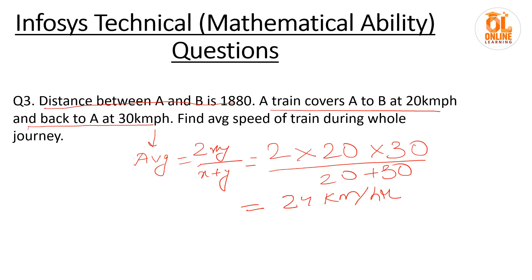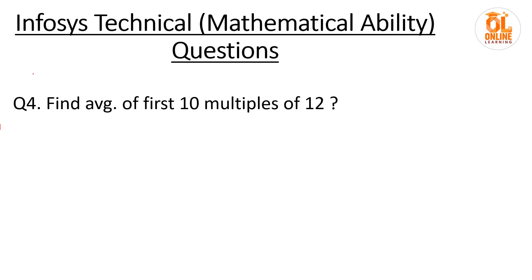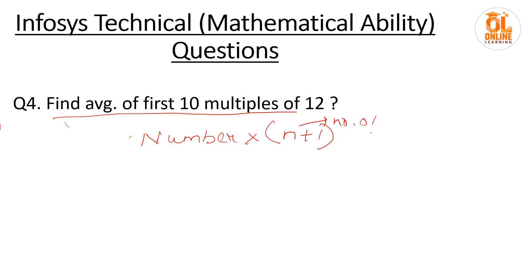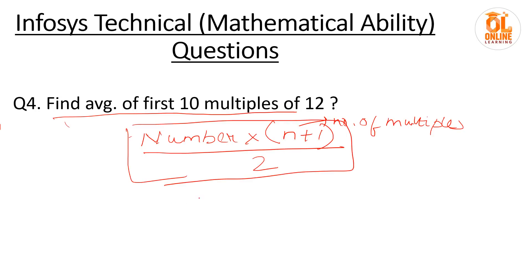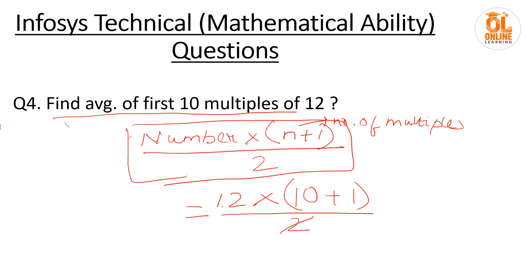Check and tell me if it is right in the comment section. Now the next question is also about averages — find the average of the first 10 multiples of 12. The formula is: number × (number of multiples + 1) / 2 = 12 × 11/2 = 12 × 5.5 = 66.